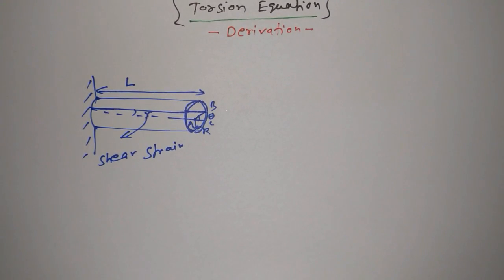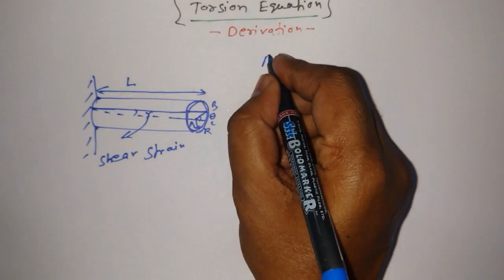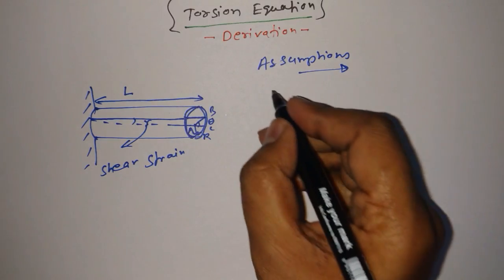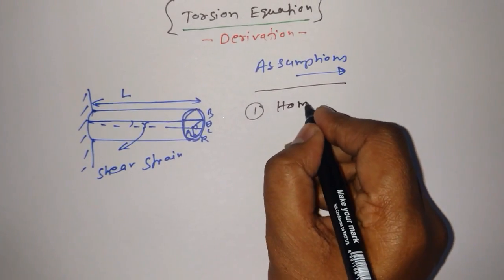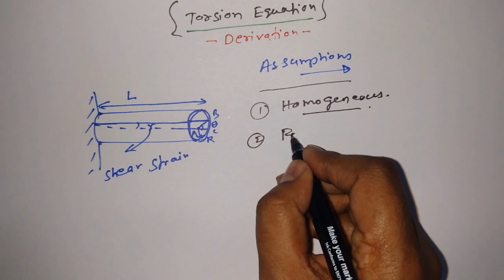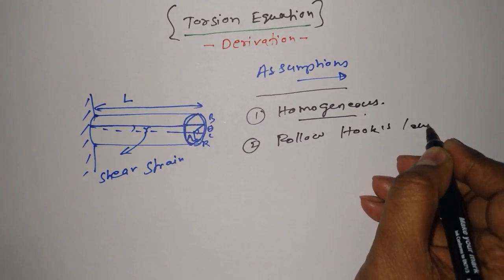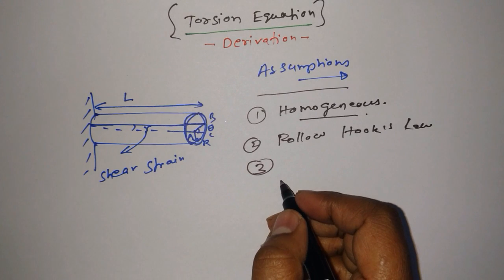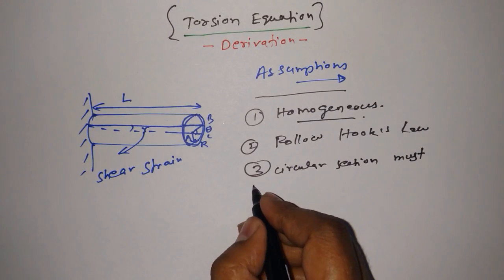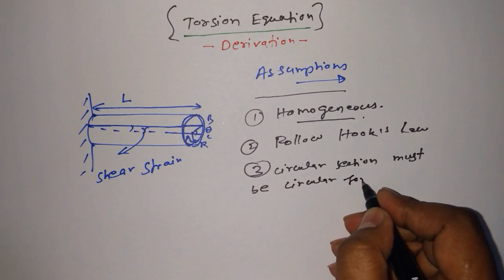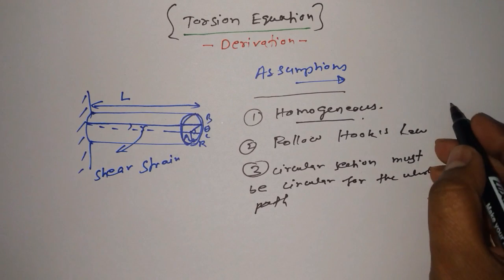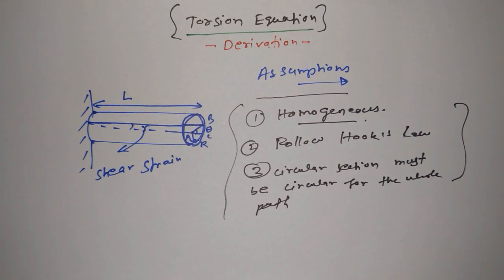Now we have done with the diagram. What we require right now are the important assumptions we have to consider before doing the derivation — assumptions play the most important role. The first assumption is that the material we are using in this cylinder should be homogeneous. It should follow Hooke's law. The third assumption, which is most important, is that the circular cross-section must remain circular for the whole path from one end to the other.